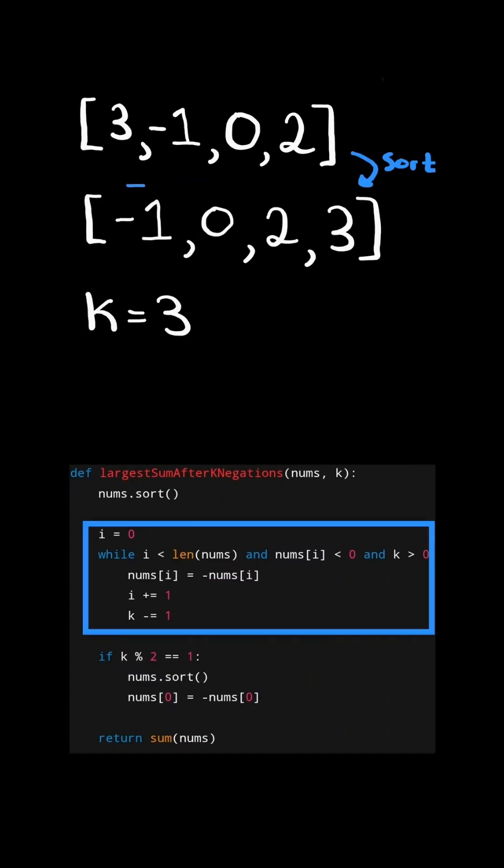And our first goal is to iterate through the list and flip any negatives into positives in order to maximize the sum. We have come across a negative 1 in which we flip into a positive. And then we decrement k by 1.